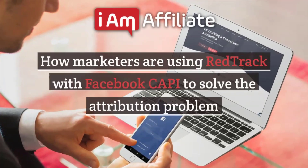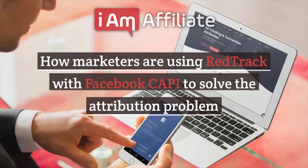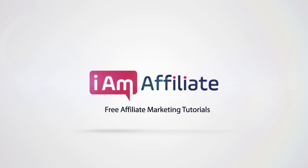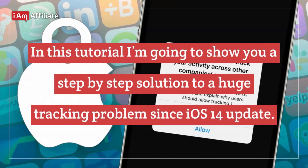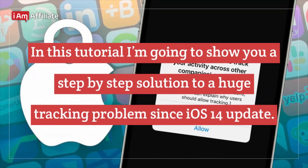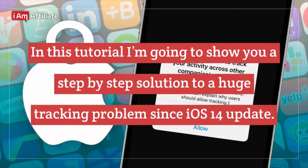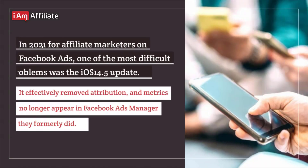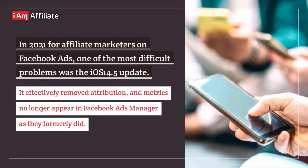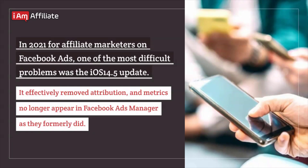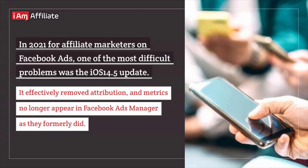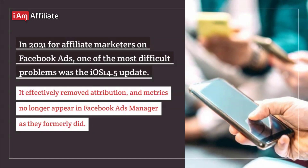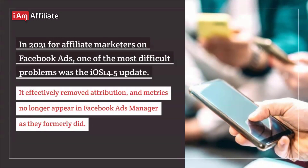How marketers are using RedTrack with Facebook's Conversion API to solve the attribution problem. In this tutorial, I'm going to show you a step-by-step solution to a huge tracking problem since the iOS 14 update. In 2021, for affiliate marketers on Facebook ads, one of the most difficult problems was the iOS 14.5 update — it effectively removed attribution and metrics no longer appear in Facebook Ads Manager as they formerly did.